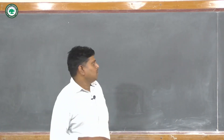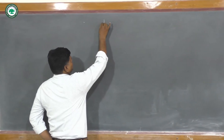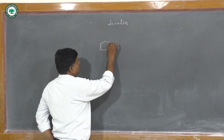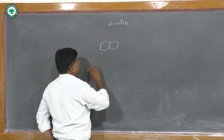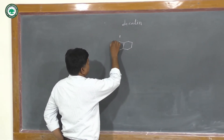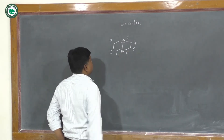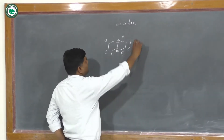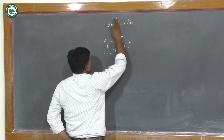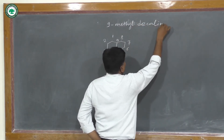Now, another point: in the case of 9-methyldecaline, if we see the hydroplanar structure of decaline and give numbering to the carbon atoms — 1, 2, 3, 4, 5, 6, 7, 8, 9, and 10 — in this case, 9-methyldecaline is our example. We write here 9-methyldecaline: at the ninth carbon atom, we have one methyl group.